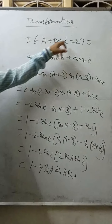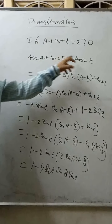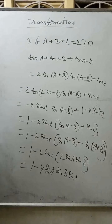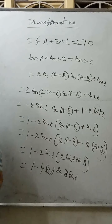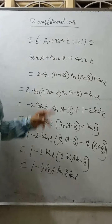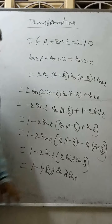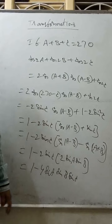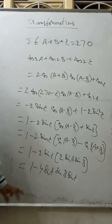Remember: if A+B+C = 180°, then cos A plus cos B plus cos C equals 1 plus 4 sin(A/2) sin(B/2) sin(C/2). And if A+B+C = 270°, then cos 2A plus cos 2B plus cos 2C equals 1 minus 4 sin A sin B sin C. Keep these results in mind.